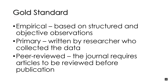The gold standard — what you should recognize as a good article or characteristics of a good article in psychology — is that it should be empirical, meaning it's based on structured and objective observations. It should be primary, meaning it's written by the researcher who collected the data. And it should be peer-reviewed, meaning the journal requires articles to be reviewed before publication. Up until maybe 10 to 20 years ago, these were the filters that really ensured good quality research.